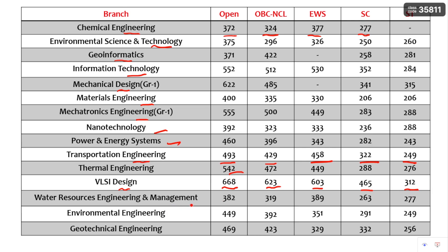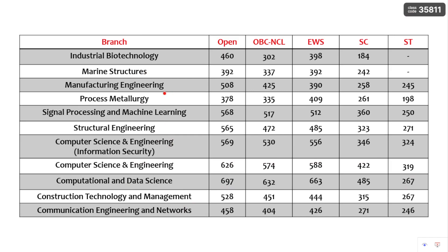Next, Water Resource Engineering and Management, Environmental Engineering, and Geotechnical Engineering — you can pause the video to go through the cutoffs for each branch by category. Other branches include Industrial Biotechnology, Marine Structures, Manufacturing Engineering, Process Metallurgy, and Signal Processing and Machine Learning. Structural Engineering, the top branch in Civil Engineering, has cutoffs of Open: 565, OBC-NCL: 472, EWS: 485, HC: 323, HD: 271.